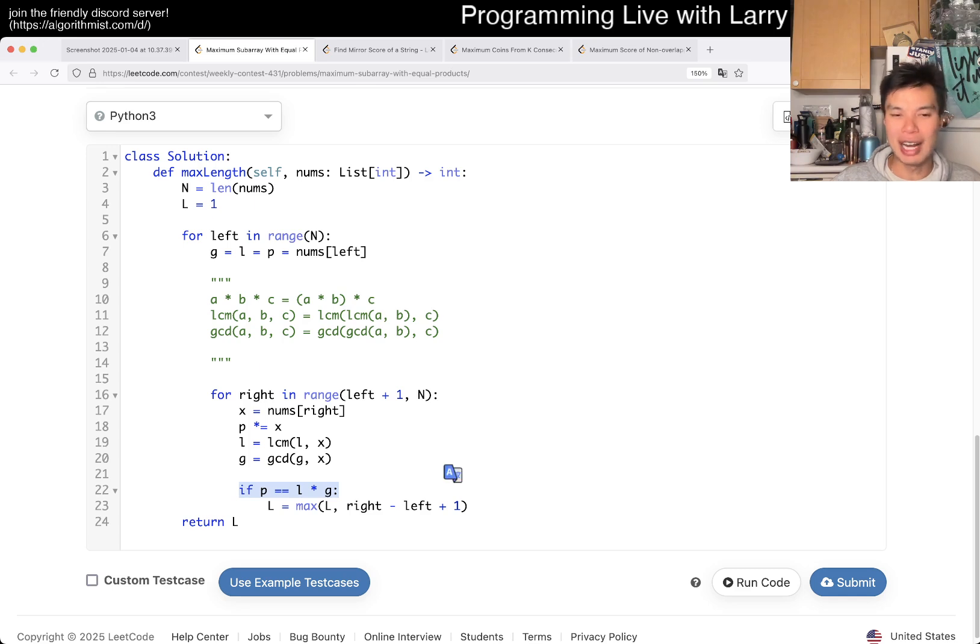This is the condition that they tell you, and if that's true, then you can choose the length. That's pretty much it. N-squared time, O(1) space. Thanks for watching, and you can watch me during the live contest next.